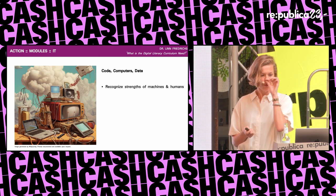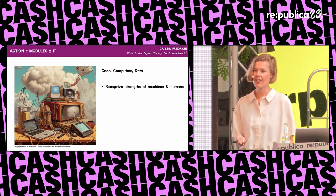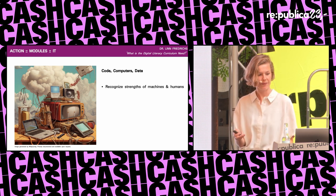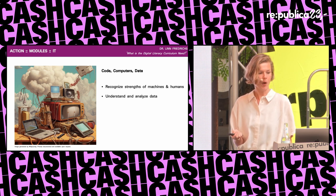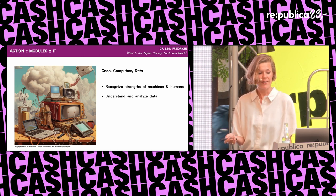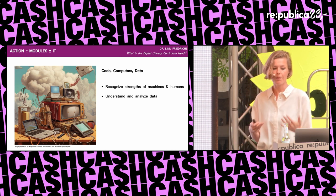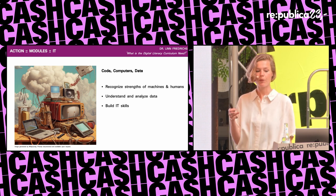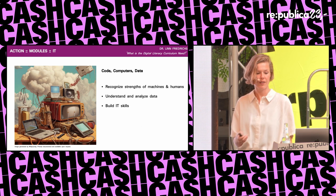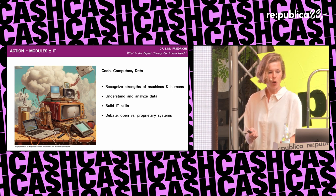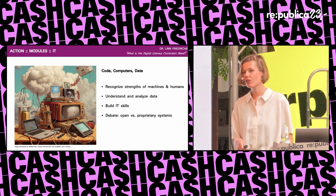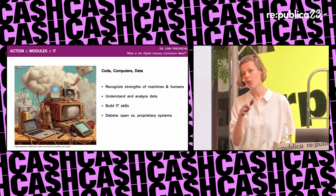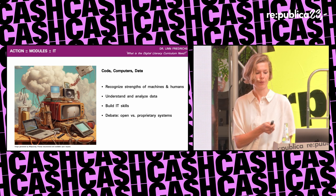Module seven covers machines and humans: how do machines and humans process information differently? What is data, and how can we get from raw data to meaningful insights? This is where students practice basic IT skills like coding, prompting, file management, and IT security — especially for mobile devices. They should also engage with the ideological and practical differences between open source and proprietary systems or software.